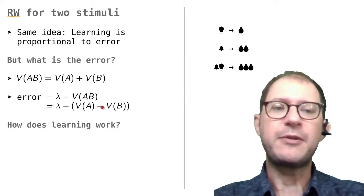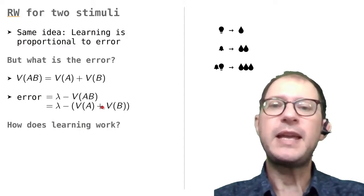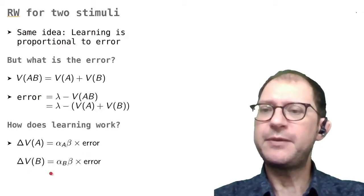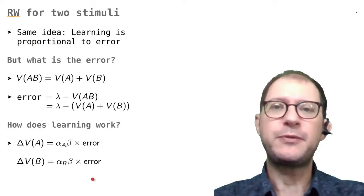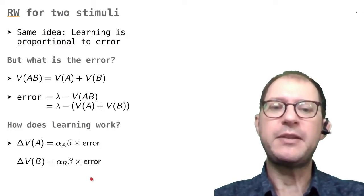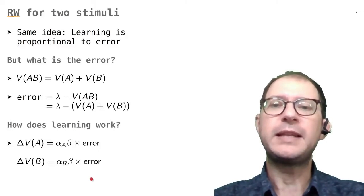Now we just have to plug in the error in the RW learning equation, and we know how to update V(A) and V(B). And here it is, delta V(A) and delta V(B). They look exactly the same, they use the same error, and the only difference is that the alpha value might be different for the two stimuli. I have indicated this by writing alpha A in the formula for delta A and alpha B in the formula for delta B.